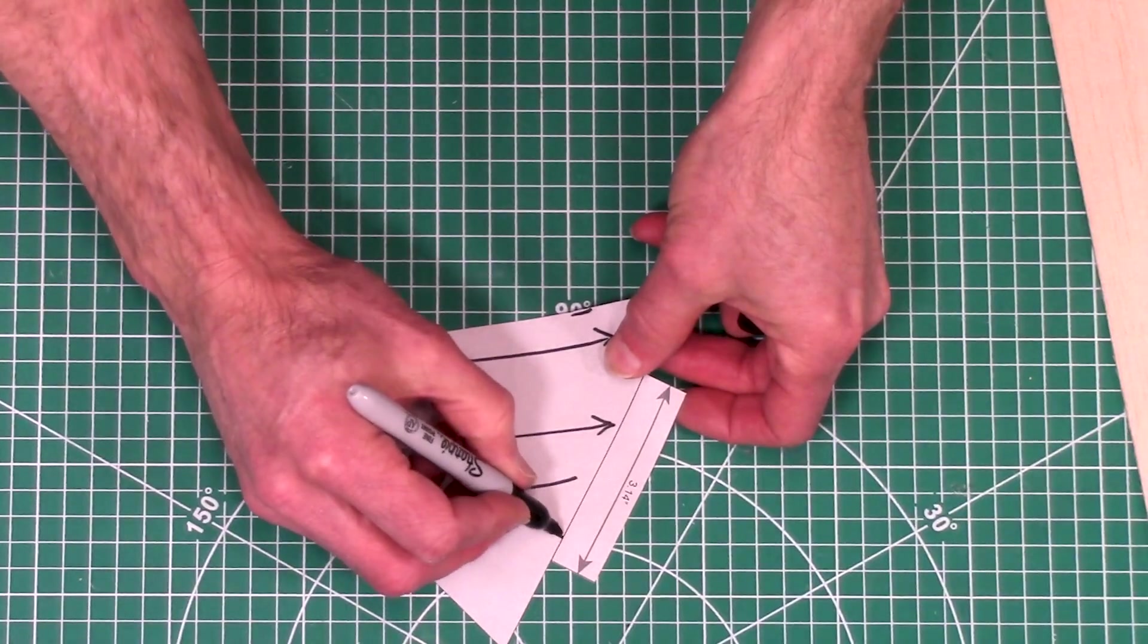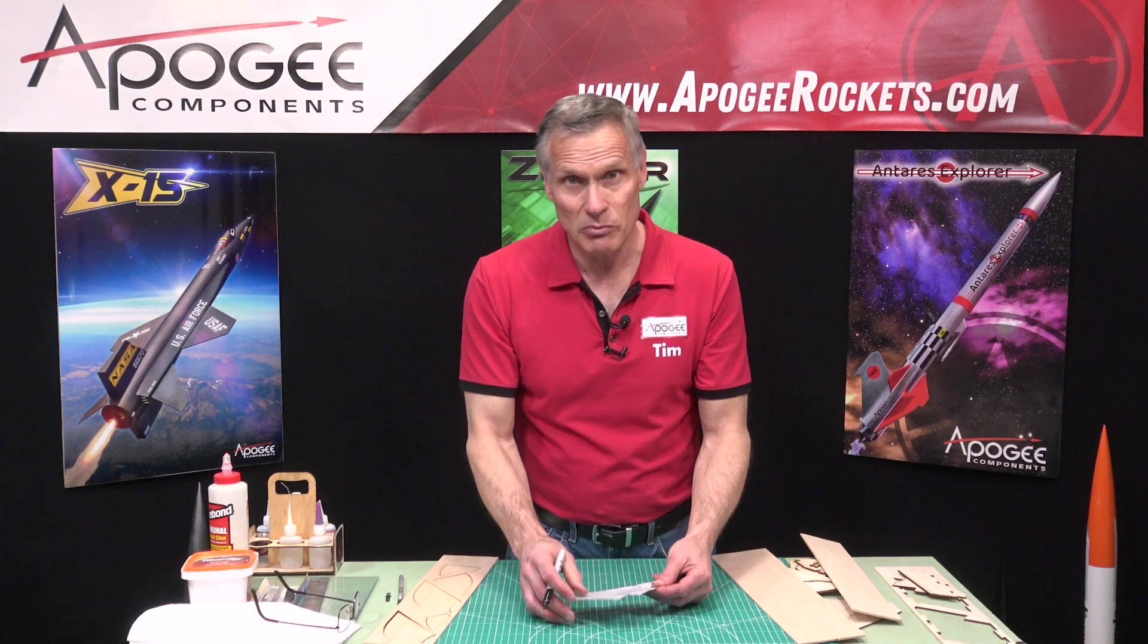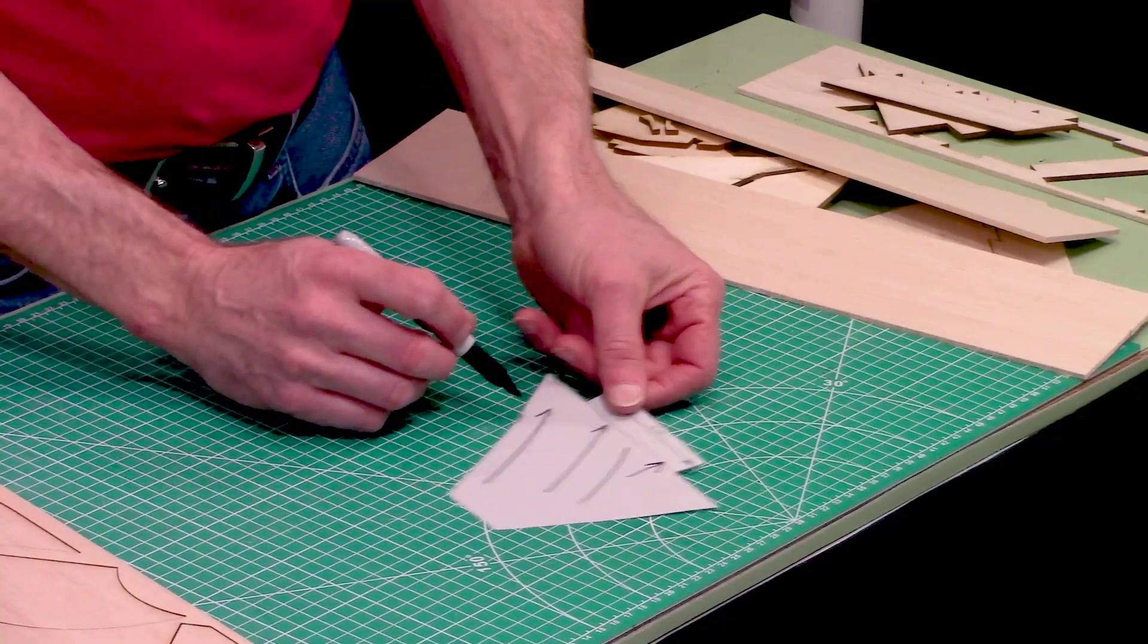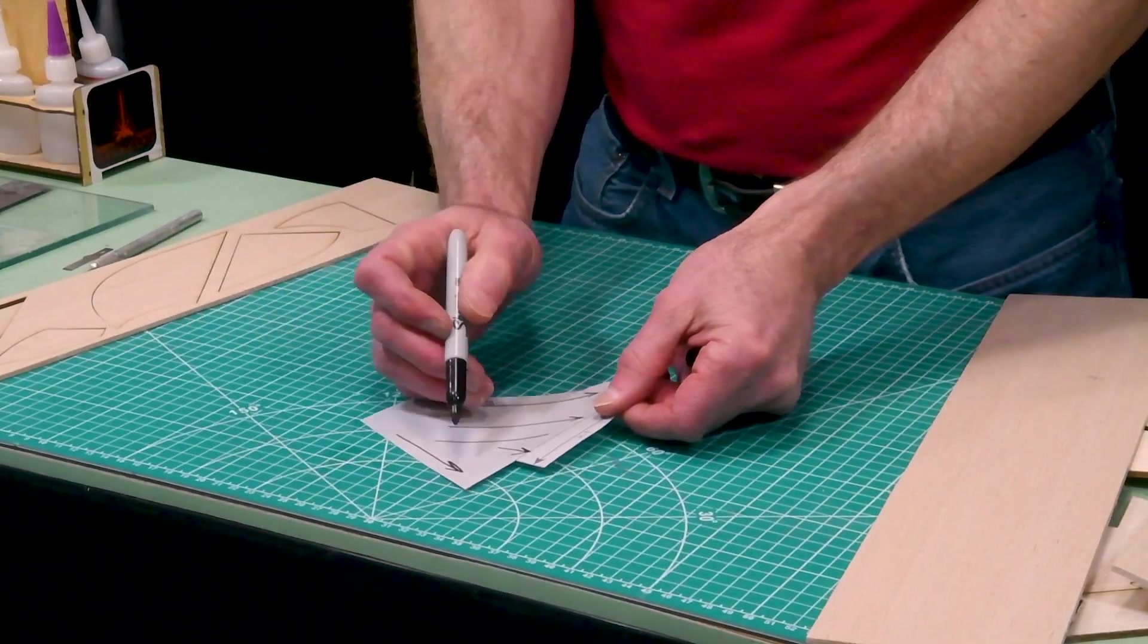So if you imagine arrows that indicate the grain fiber direction, we want it to go into the tube. Now you could also go this way, but at that point you might run into some problems later depending on the shape of your fin. But typically either the leading edge or the trailing edge direction of the grain.